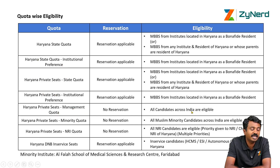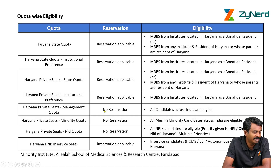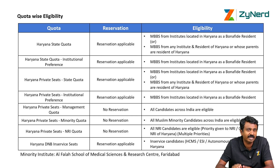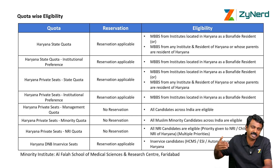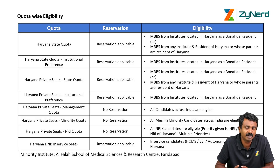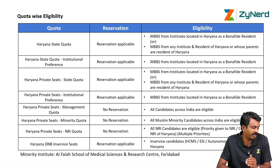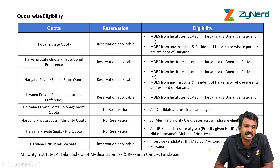Private seats management quota: Haryana is an open state, so management quota is available for every candidate across India, including FMGs. Minority quota is for all Muslim minority candidates across India — there is one minority institute in Haryana, Al-Falah. NRI quota is open to all NRI candidates across India, but Haryana has multiple priorities: first priority is for NRI or children of NRI from Haryana; only after those seats are filled does the second priority start. DNB in-service seats in Haryana are available for in-service candidates only.